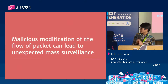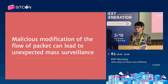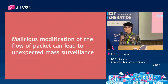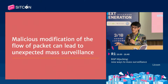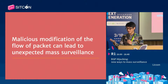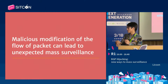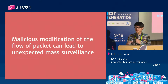The malicious modification of the flow of packets can lead to unexpected mass surveillance. What does that mean? It means that if I modify the flow of packets - like redirecting all the traffic from one place to another and inspecting the content in between - it can cause mass surveillance on a global scale.